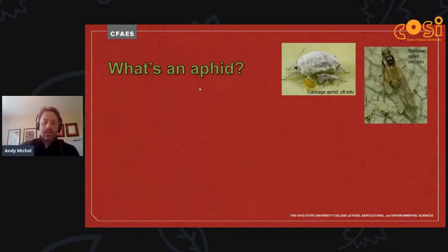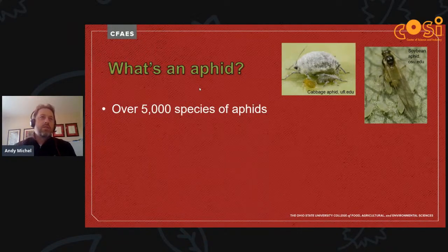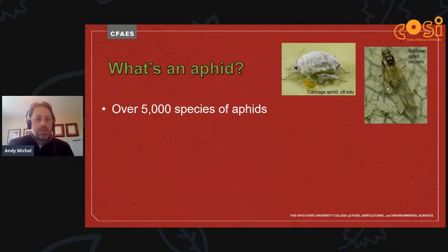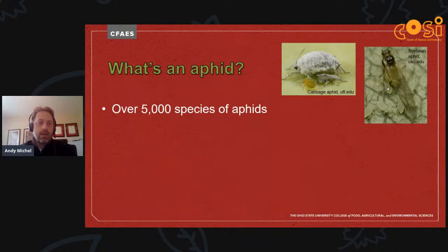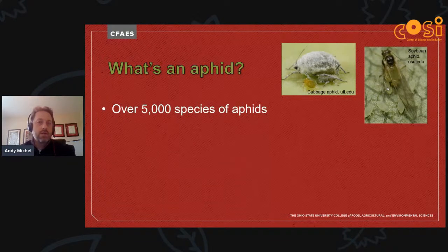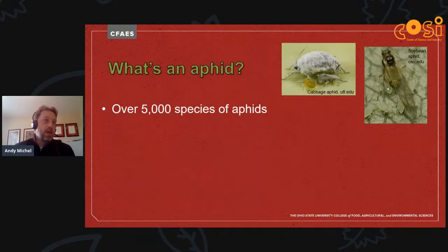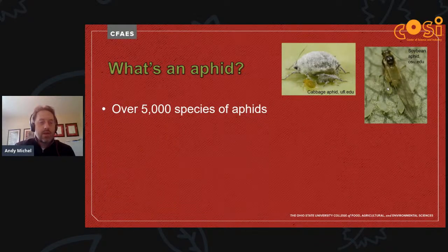So, what is an aphid? There are many different types of aphids — here's a picture of a cabbage aphid and a picture of a soybean aphid. There are over 5,000 species of aphids that are known, and some of these contain cryptic species. Most aphids feed on plants, and some that feed on a certain type of plant may look like a similar population that feeds on a different plant. There's a lot of cryptic speciation and cryptic diversity, and this number might even be an underestimate.